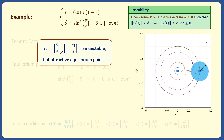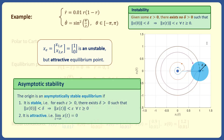As we can see from the asymptotic stability definition, attractivity implies asymptotic stability only if the equilibrium is also stable. But attractivity by itself does not imply asymptotic stability.